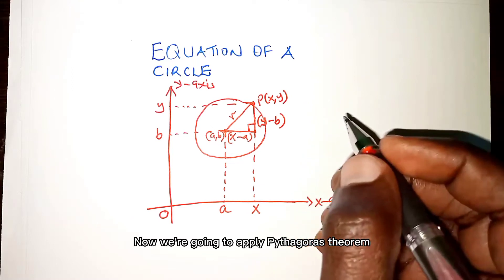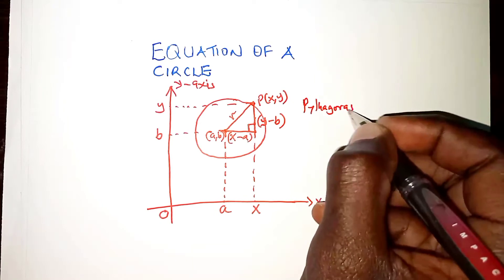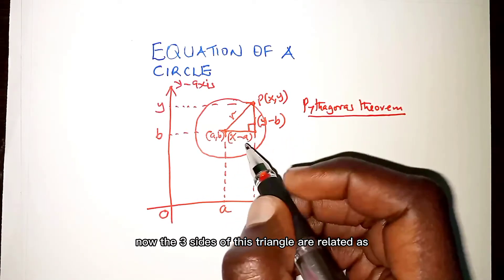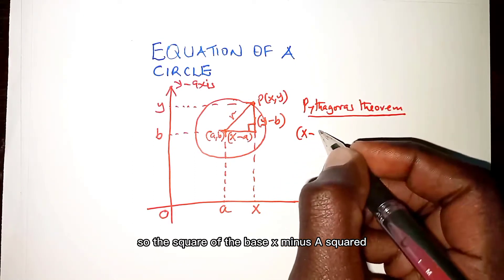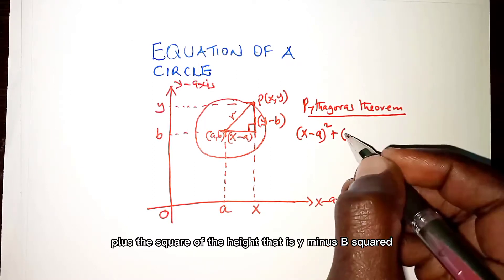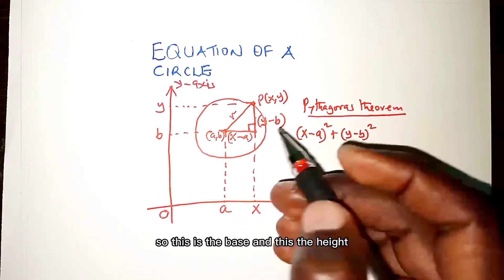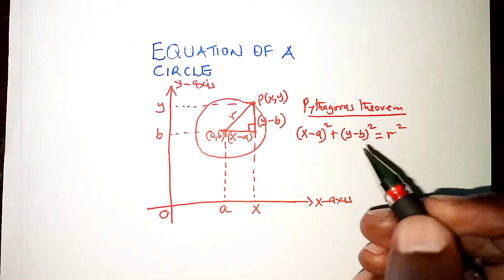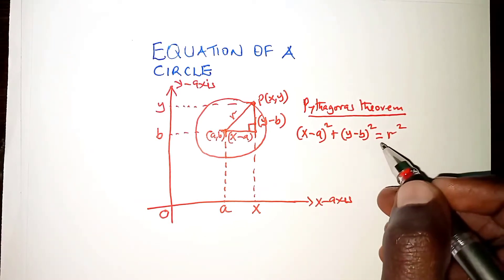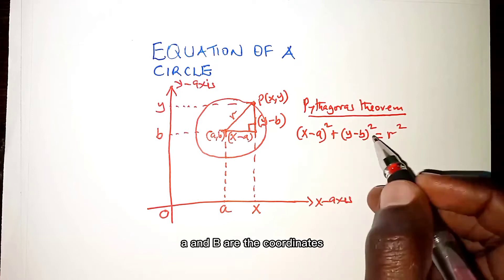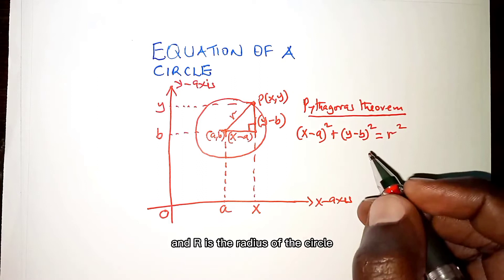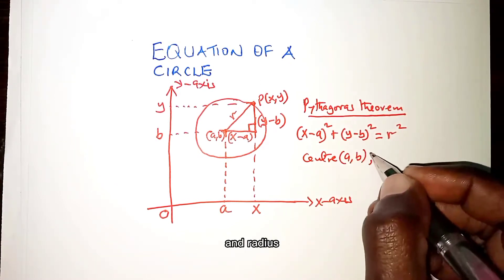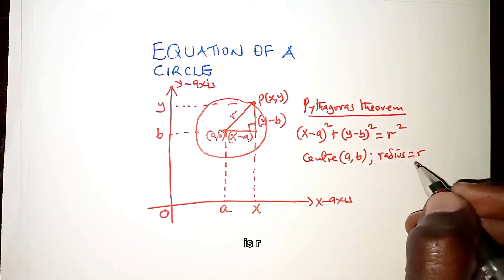Now we are going to apply Pythagoras' theorem. The three sides of this triangle are related as: the square of the base, (x minus a) squared, plus the square of the height, (y minus b) squared, equals the square of the hypotenuse, which is the radius of the circle. This gives us the general form of the equation of a circle, where a and b are the coordinates of the center and R is the radius.